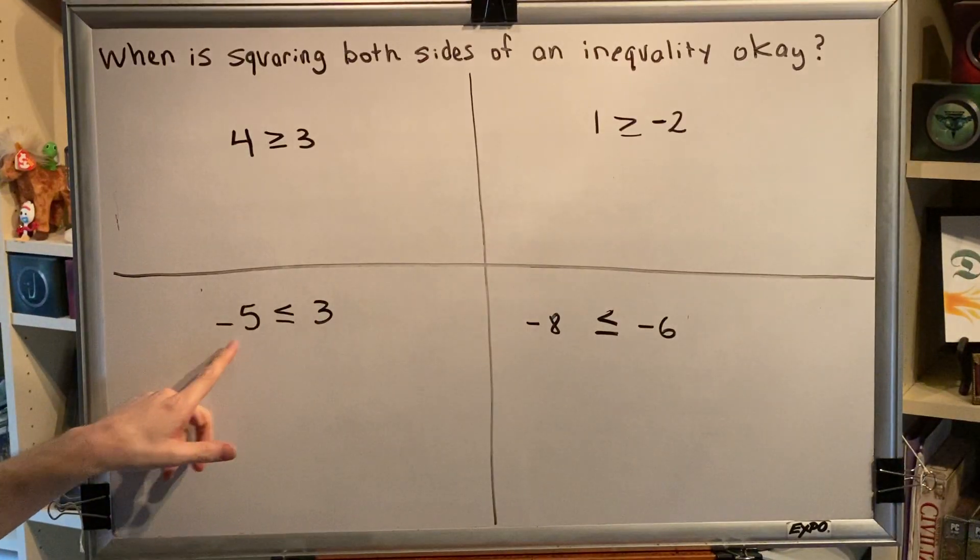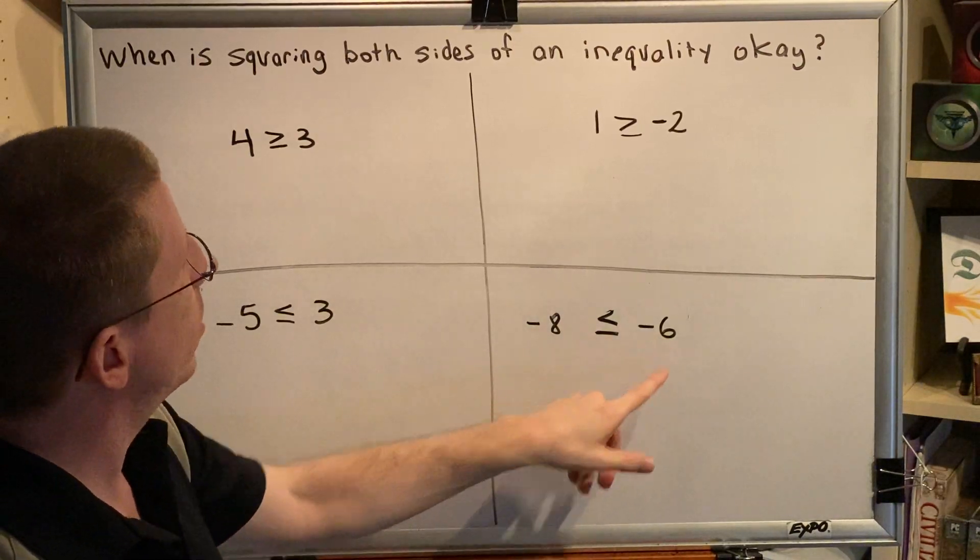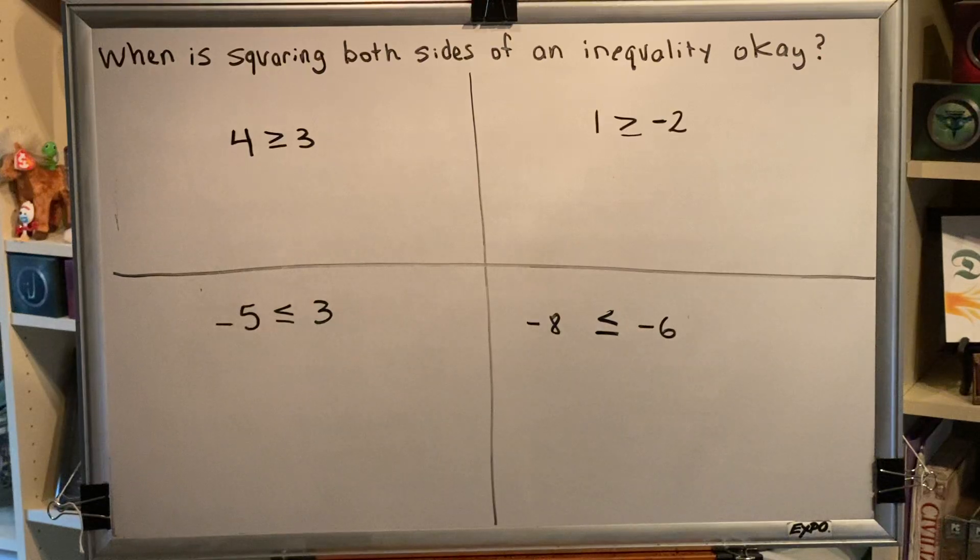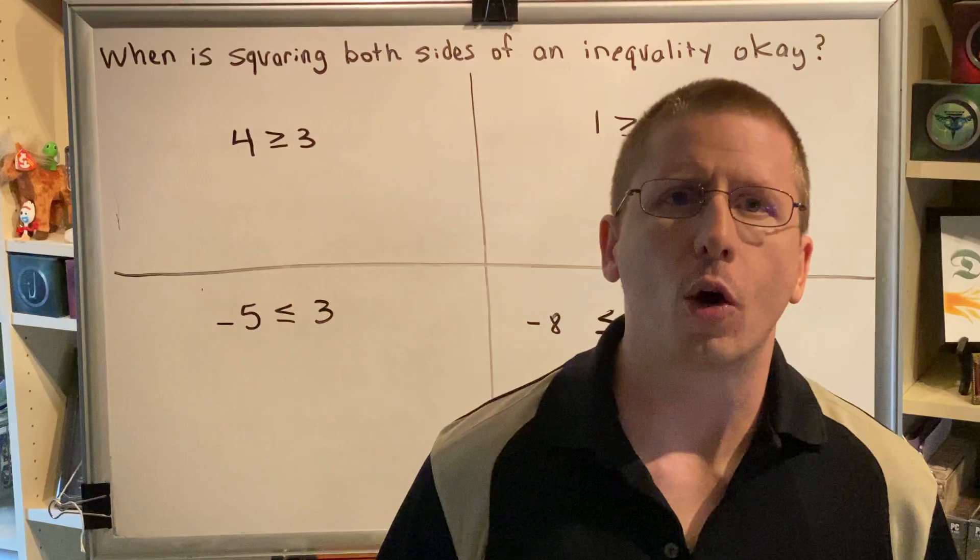Negative five is less than or equal to three, that's true. Negative eight is less than or equal to negative six, that's true. So the question becomes what happens if we square both sides.